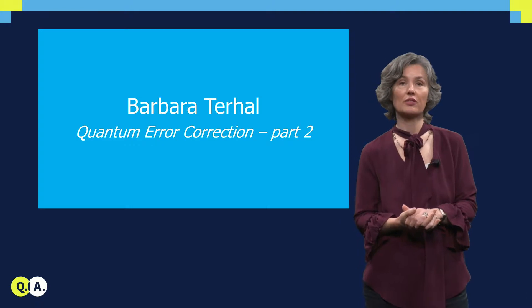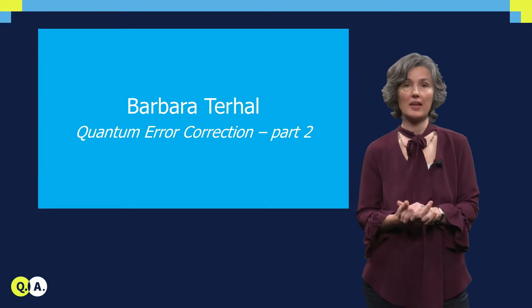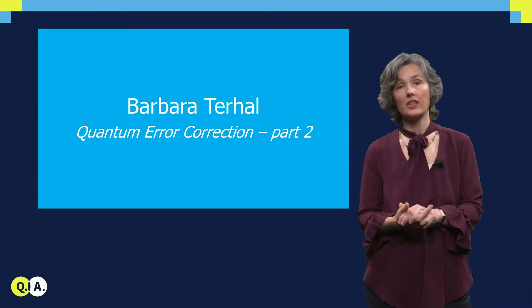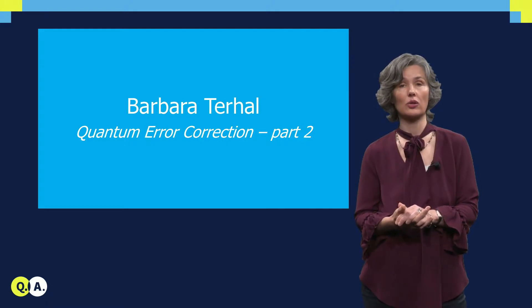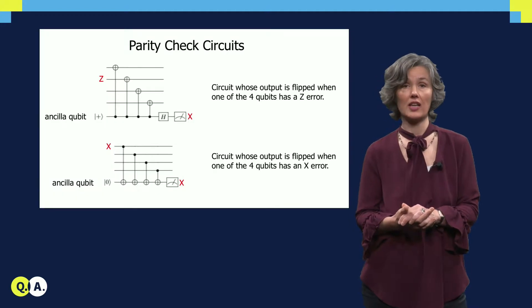The most common class of quantum error correction codes are stabilizer codes. For these codes, error information is gathered by executing so-called parity check circuits, as you see in the slide.